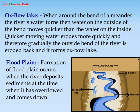Oxbow Lake: When around the bend of a meander the river's water turns, water on the outside of the bend moves quicker than the water on the inside. Quicker moving water erodes more quickly, and therefore gradually the outside bend of the river is eroded back and it forms an Oxbow Lake.